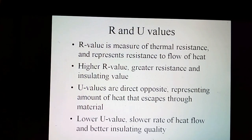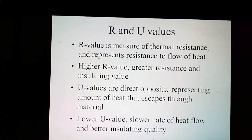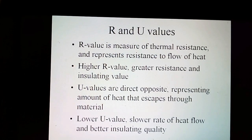The lower the U-value, the slower the rate of heat flow and the better the insulating quality. It is expressed as the thickness of the material divided by the thermal conductivity. For the thermal resistance of an entire section of material, instead of the unit resistance, divide the unit thermal resistance by the area of the material. If you have the unit thermal resistance for a wall, divide it by the cross-sectional area to compute the total resistance.